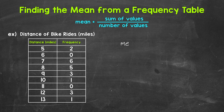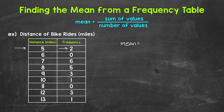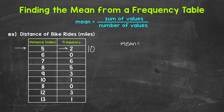So the mean equals — let's first find the sum of the values, the distances. Looking at the table, we start with a distance of five miles, and that occurred twice. So instead of writing each individual value, let's use the frequency table to shorten that addition problem. Five plus five gives us 10. Then we don't have any sixes. Then we have seven miles, which occurred six times — seven times six — that gives us 42.